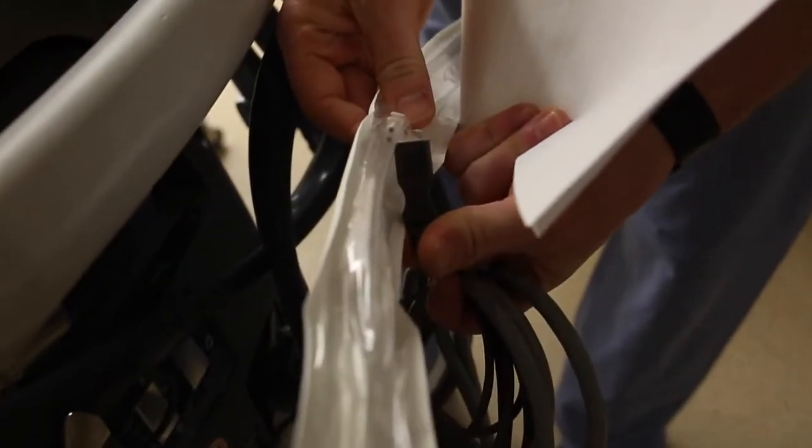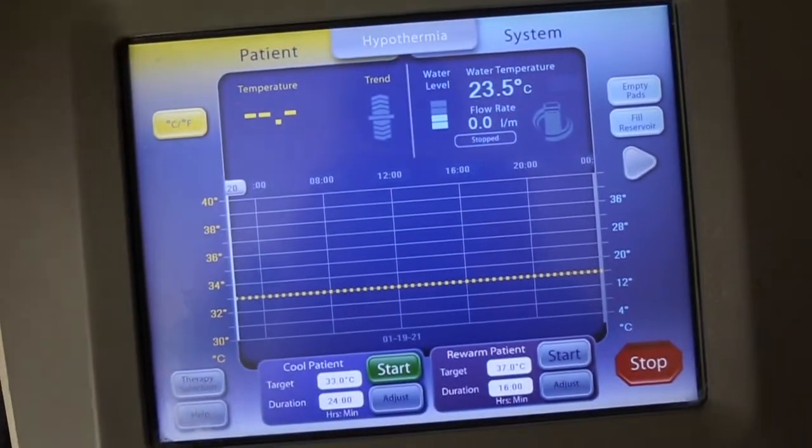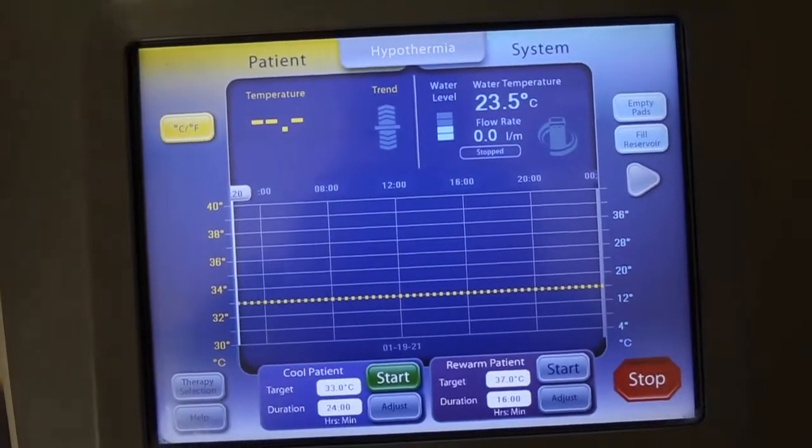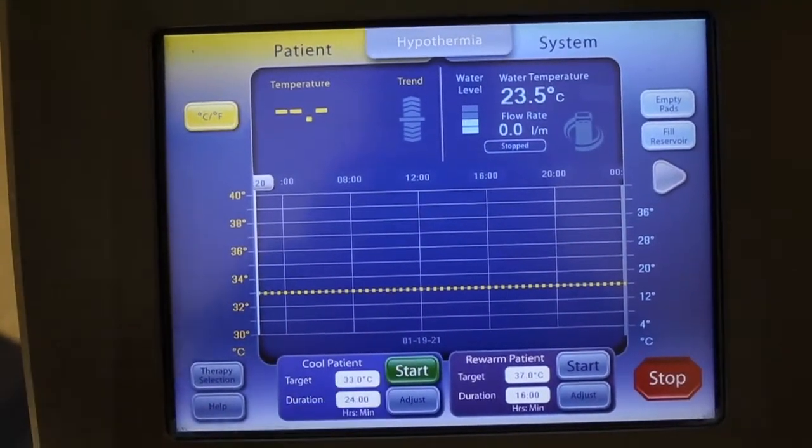The Arctic Sun needs this to monitor the patient's body temperature as it cools them. This is esophageal or rectal. Once connected, you can start the treatment and it'll begin cooling the patient.